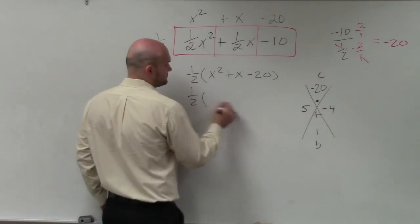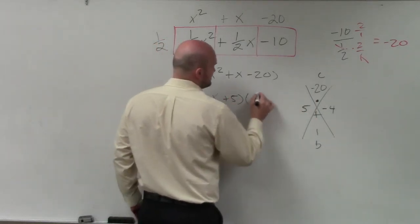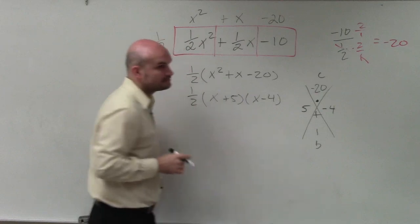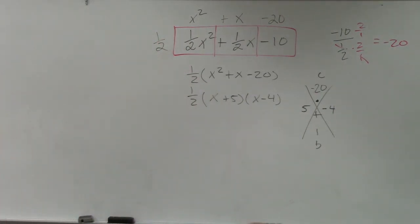And then you just factor that down. Since a is 1, those are part of my factor. So it's x plus 5 times x minus 4. Does that make sense? Yes, yes, no, maybe so.